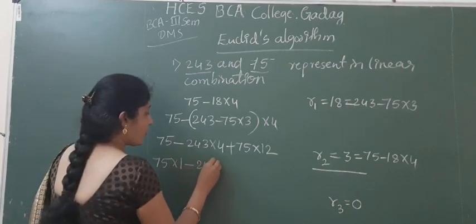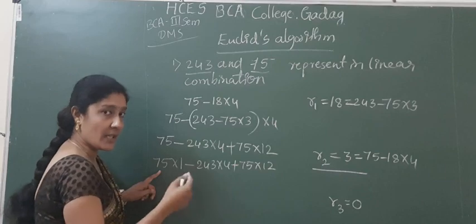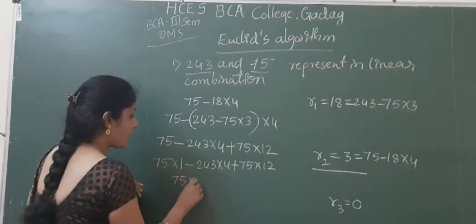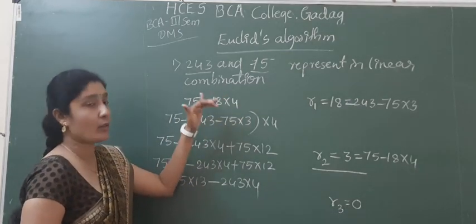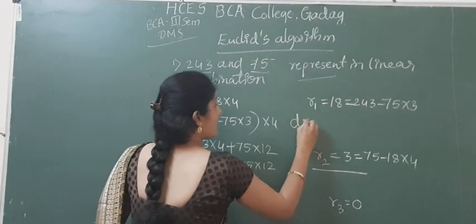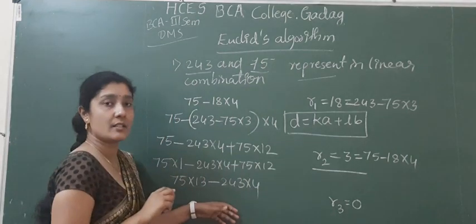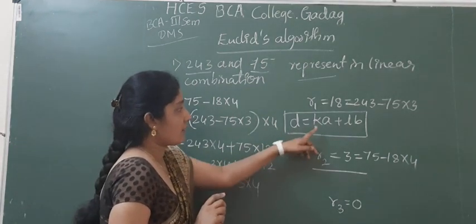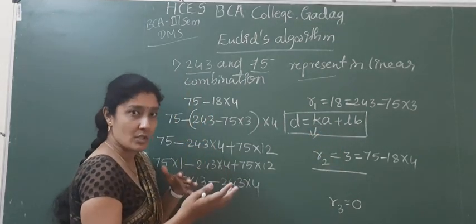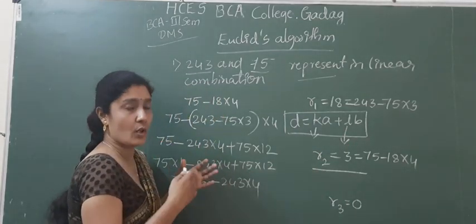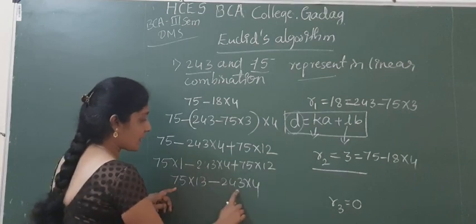You have to remember that the given integers must remain as they are — you should not multiply the given integers with any other number. So 75 is written as 75×1, and combining: 75×1 plus 75×12 gives us 75×13. So we get: 3 = 75×13 − 243×4. Now we have to represent this in standard form.